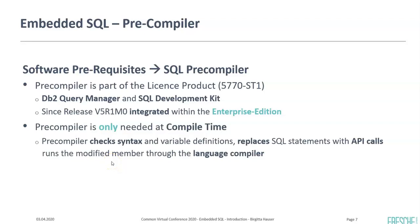The pre-compiler itself is only needed at compile time. That means the pre-compiler first checks the SQL syntax, checks your sources, and then replaces the SQL statements with API calls. After it has modified the source, it sends it to the regular language compiler, and it generates either a module or a program.